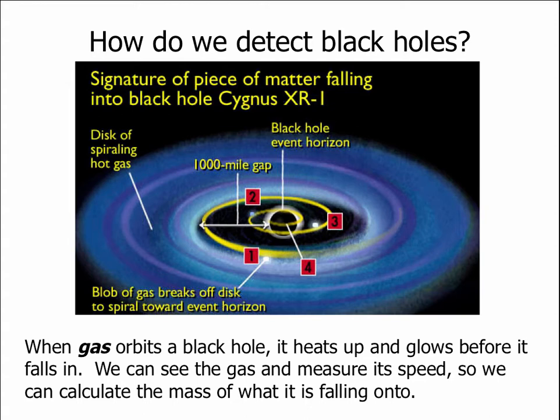So this gas that's orbiting Cygnus X-1 and other black holes, it will heat up, it will glow. We can see the gas. We can use the Doppler shift to measure the speed of the gas. And because we can measure the speed of the gas, we know how fast it's spiraling, how long it takes to go around.